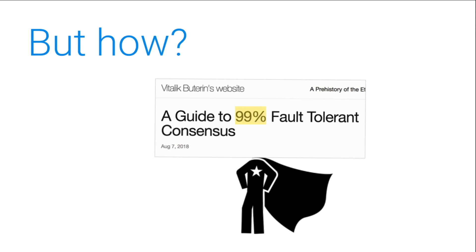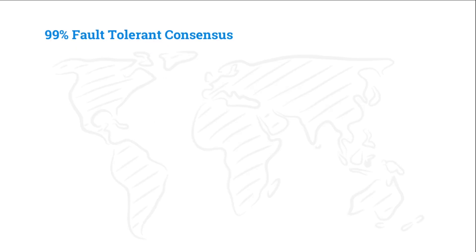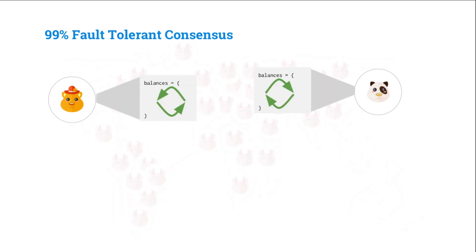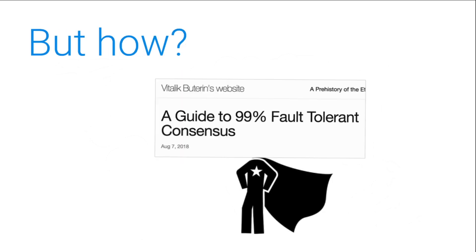Guide to 99% fault-tolerant consensus: Vitalik came out with a blog post, and this is actually an old consensus protocol. It allows us to have 99% fault-tolerant consensus. We have a network with a bunch of participants — maybe most of them are bad. Almost all Mallory's, but there are two honest participants: Jing and Alice. Using this protocol, they're actually going to be able to stay in sync and achieve consensus, no matter how large the field of Mallory's.